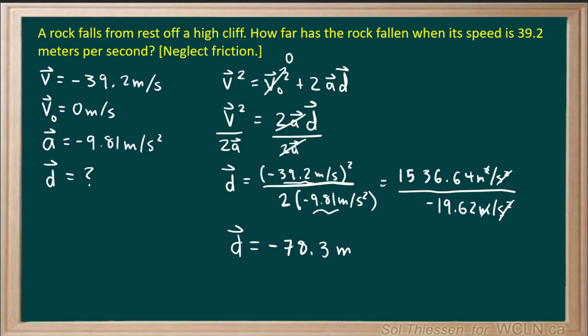And keep in mind this negative indicates the downwards direction of the displacement. So this is 78.3 meters below the point where the rock fell from rest. So if we're looking for the distance that the rock has fallen, that will simply be the magnitude of the displacement: 78.3 meters.